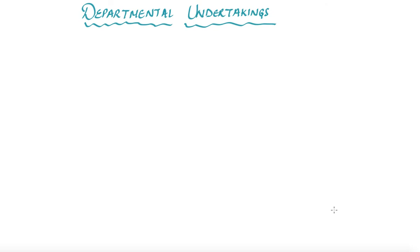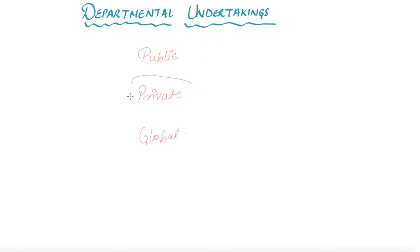Hello friends. Now coming towards our next topic, that is departmental undertakings. First of all, let's take a revision of our previous session where we discussed that our business enterprises are basically divided in three sectors: the first one is public, second one is private, and third one is global enterprises. We have already discussed private enterprise in our last chapter, which was forms of business organization.